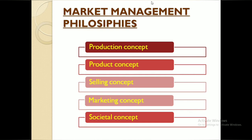The second is the product concept — they say we need to create a superior quality product that customers will want to purchase. We make good quality products, set a good price, specify satisfaction levels, and add extra superior features. The third is the selling concept — sell by hook or crook. We focus on selling what we have already produced through aggressive promotion techniques, without considering customer needs.